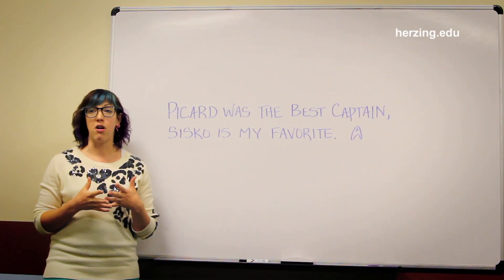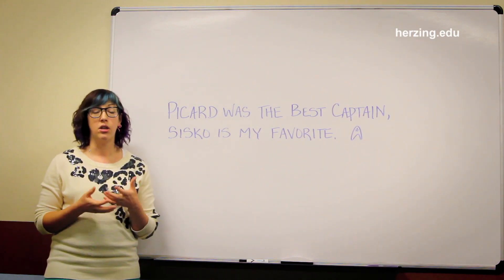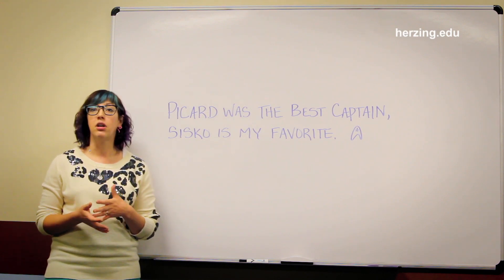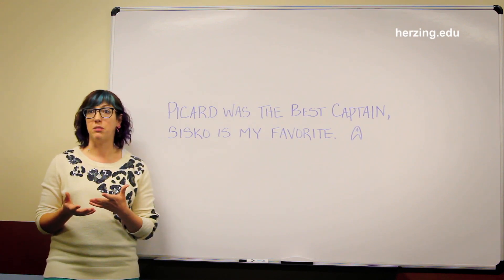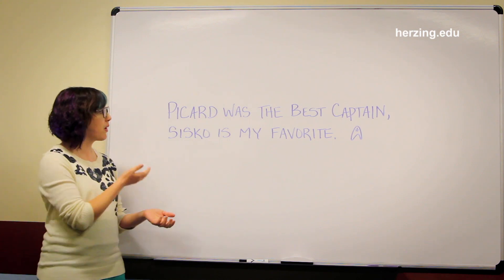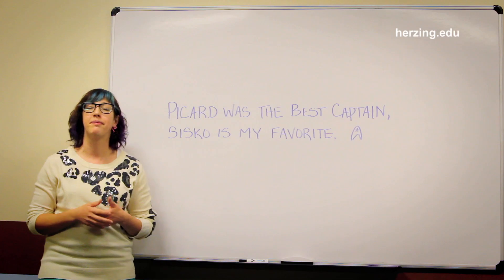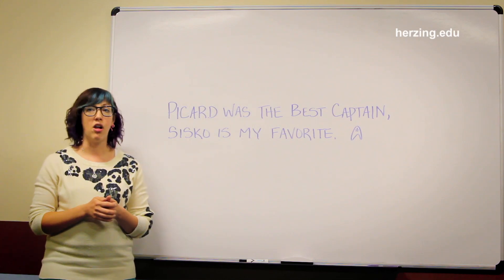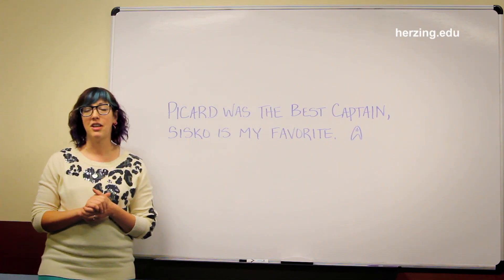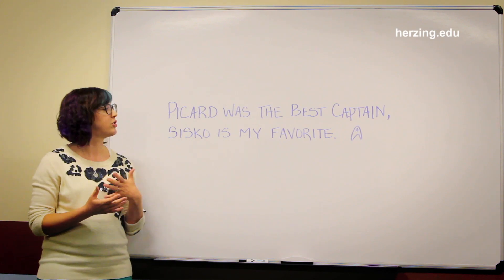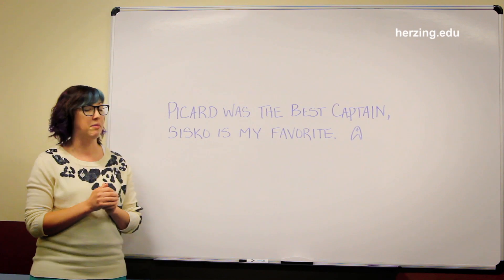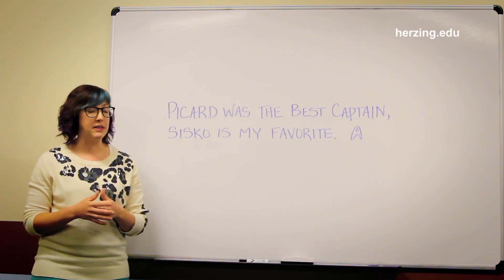An independent clause is a part of a sentence that has a subject — what the sentence is or who the sentence is about — a verb, what the subject is doing, and that expresses a complete thought. So, "Picard was the best captain" — that is an independent clause. "Cisco is my favorite" — that's also an independent clause. So we have two independent clauses separated by a comma, and that's a comma splice.